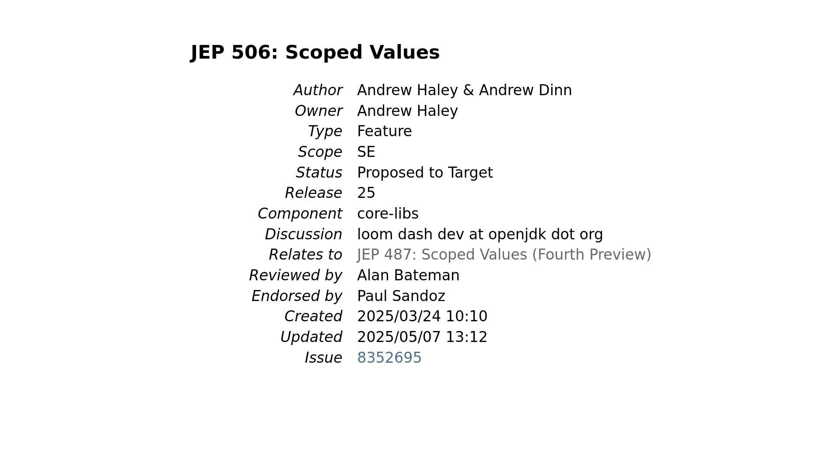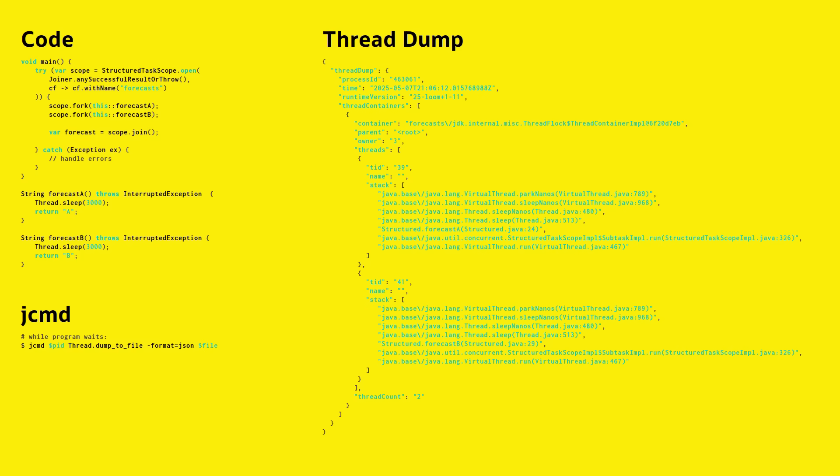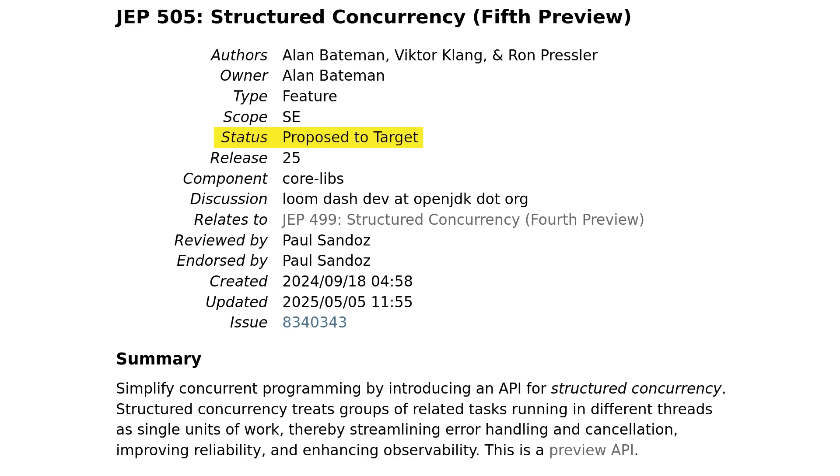JEP 506 proposes to finalize scope values in JDK 25. Fifth, jcmd can print a thread dump which comes as a tree of nested scopes and includes the scope and thread names — a huge improvement in understanding concurrent application state. Sixth and last but not least, JEP 505 is currently proposed to target JDK 25, and I'm very optimistic that it will be targeted and integrated soon. If you cannot wait that long, try the Project Loom Early Access build, which has had this API for quite a while now — link in the description. I'll see you again in two weeks.